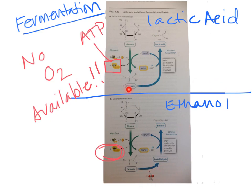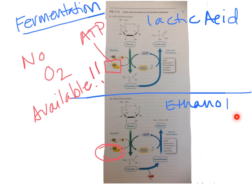Notice that in lactic acid fermentation we just make lactic acid — no CO2 released, just directly dumping hydrogens onto pyruvate. If you are a cell with enzymes that can't make lactic acid, you process to acetaldehyde, release CO2, and dump hydrogens onto acetaldehyde to make ethanol. You are an ethanol fermenter — and that's fermentation.